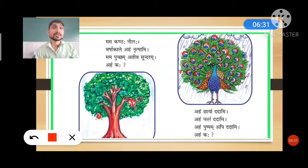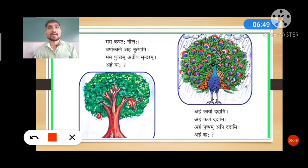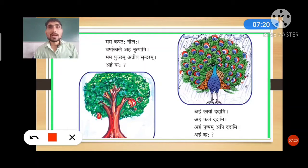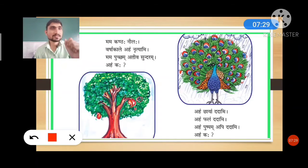The translation: aham chayam dadami — I give shadow. Aham phalam dadami — I give fruits. Aham pushpam api dadami — I also give flowers. Aham kaha — who am I? That is the concept of these two verses. In total there are eight lines. Orally: my neck is blue, I dance at rainy time, my feathers are very beautiful — who am I? I give shadow, I give fruits, I also give flowers — who am I?